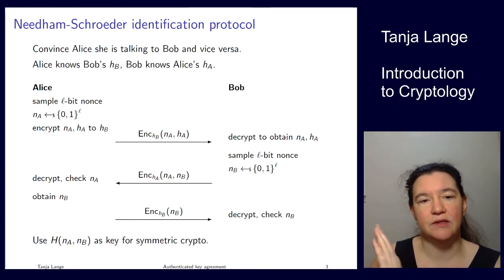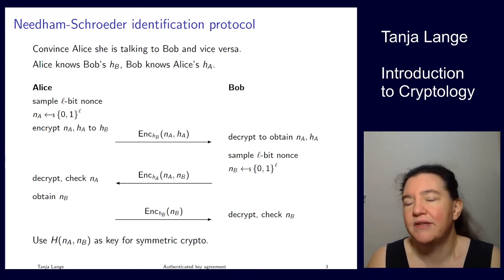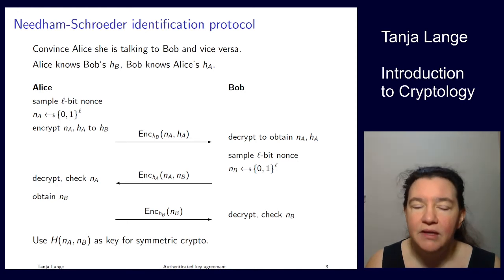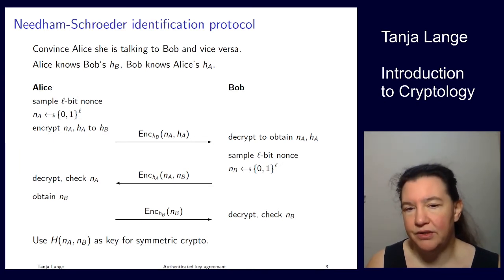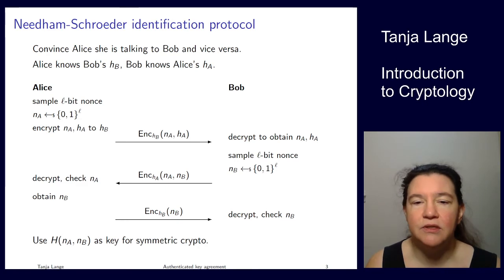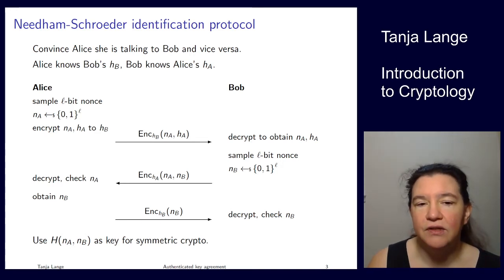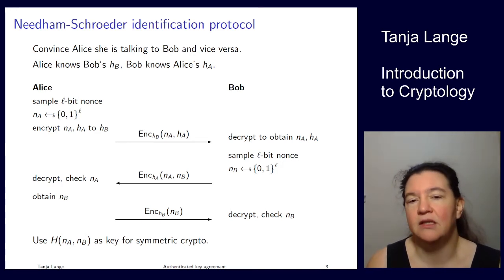So Alice receiving this, she checks, she verifies that Bob is actually the real Bob by being the one who can decrypt. So Bob has correctly identified N_A, she obtains the N_B and will then tell Bob, yep, I know I have the secret key for this H_A, and here is what you sent me. So at that point, Bob decrypts this, verifies it's the correct nonce, and then both of them are convinced that they're talking to each other. So they're using the hash of these two nonces as a key for symmetric crypto, because those are fresh for each protocol.